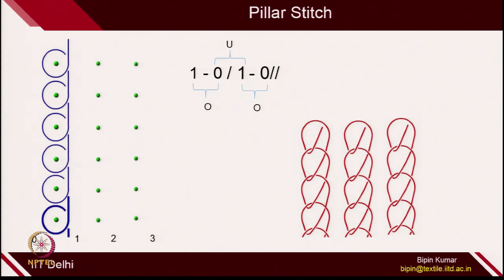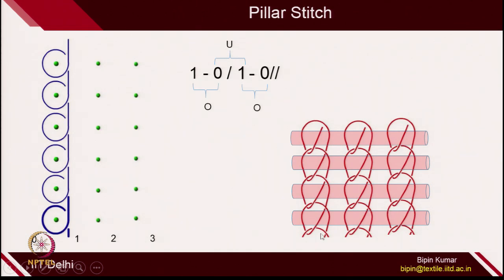To make a fabric with pillar stitch, you need another mechanism to hold the wales together. One mechanism is using floating yarns in the weft direction — weft inlays — where each floating weft connects all the wales of the fabric. If you are just using pillar-type loops, fabric cannot be created without another mechanism or other overlaps and underlaps movement to connect the loops with other columns.